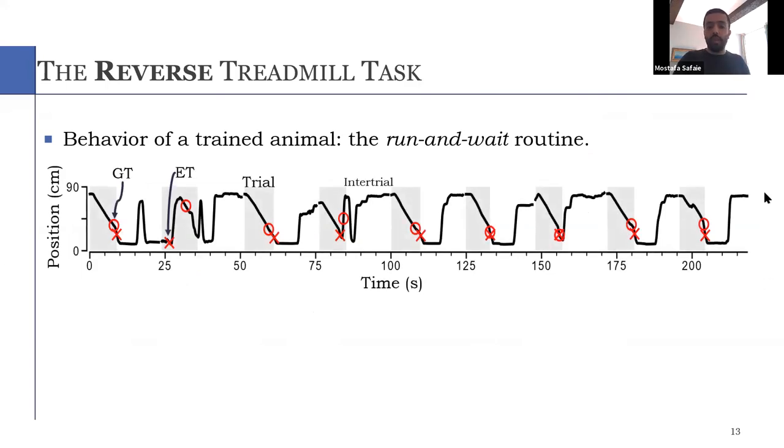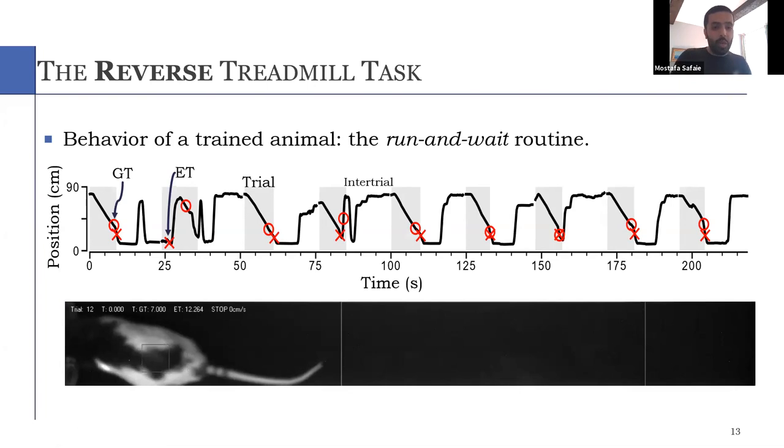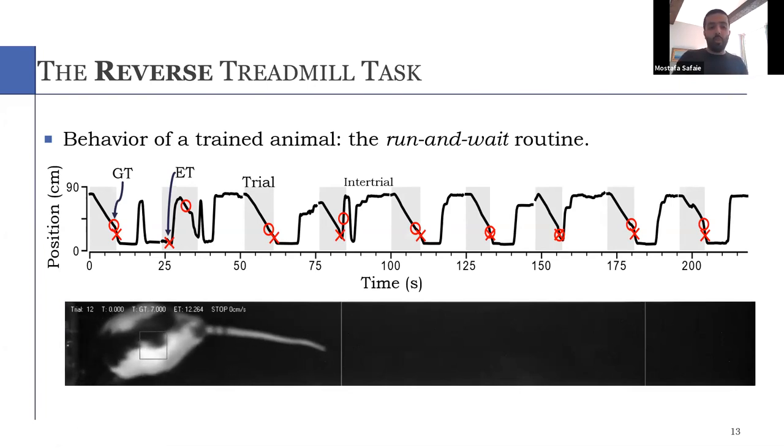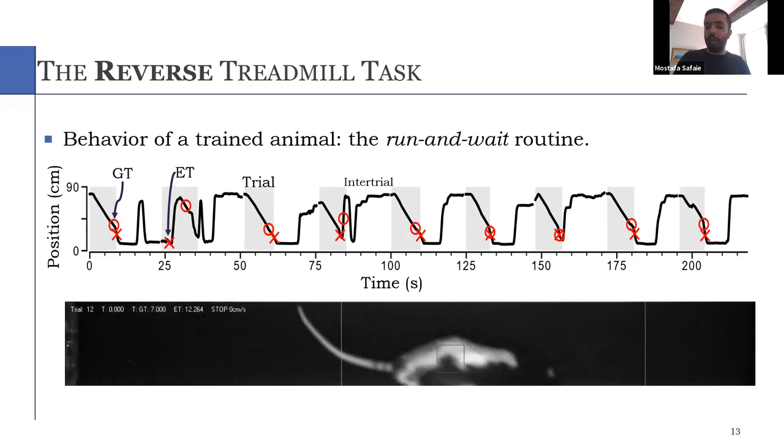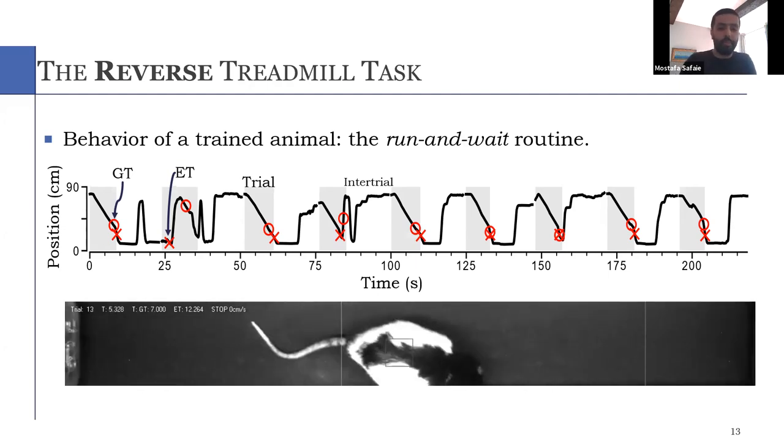So during the inter-trial, they go to the back of the treadmill and they just sit while the treadmill transports them to the front. So in this video, the animal is taking the reward from the previous trial. And then when the reward is finished, he moves slowly to the back of the treadmill and just sits there while the treadmill carries him to the reward.